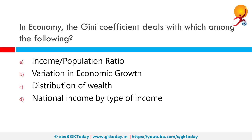In economics, the Gini coefficient deals with which among the following? The Gini coefficient represents the income distribution of a country's residents, so it deals with the distribution of wealth. It was developed by the Italian statistician and sociologist Corrado Gini and measures inequality. The coefficient ranges from zero to one, with zero representing perfect equality and one showing perfect inequality. The higher the Gini coefficient, the more the gap between rich and poor.